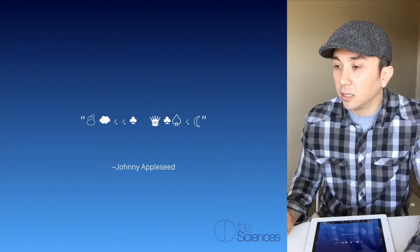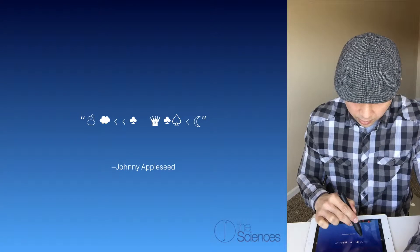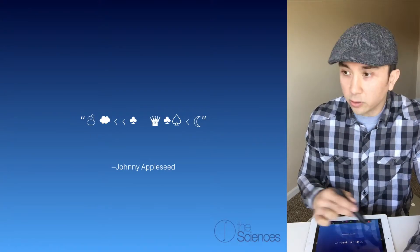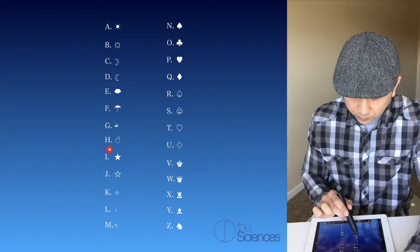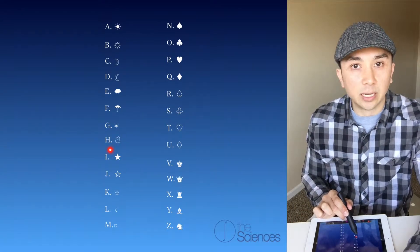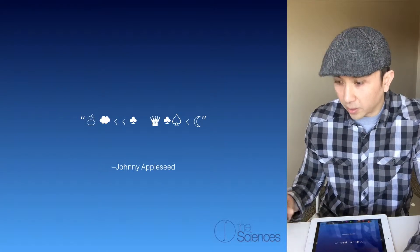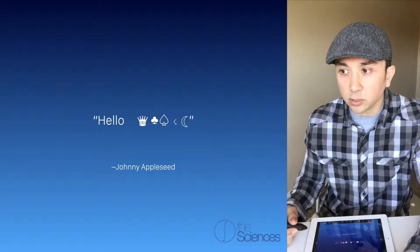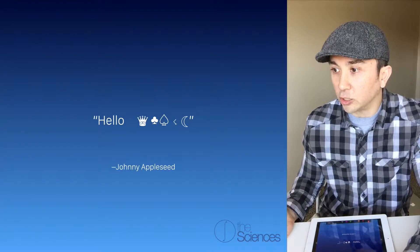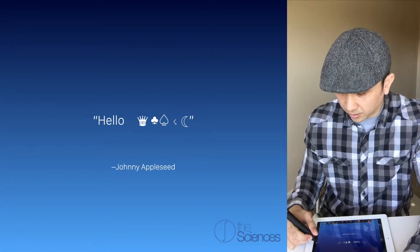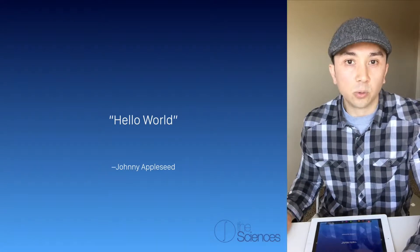You can substitute this snowman for the letter H, so you know that the snowman represents the letter H. You can start to decipher what Johnny is saying by substituting the symbols for the letters. If you substituted the first word, you know that Johnny is saying 'hello.' Then if you decipher the second word, you'd find that he meant 'hello world.'